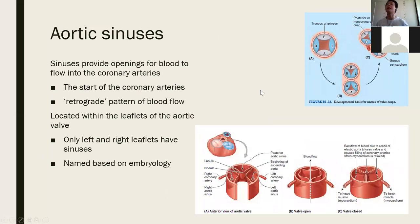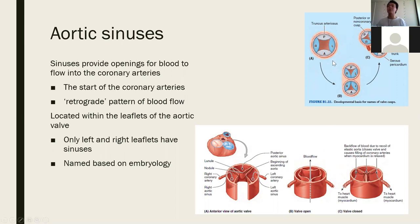Aortic sinuses provide openings for blood to flow into the coronary arteries — they're the beginnings of the coronary arteries. Blood flows into the aortic sinuses in a retrograde pattern. The aortic sinuses are located within the leaflets of the aortic valve — the left and right leaflets of the aortic valve are the ones with the sinuses and coronary arteries. There's only a left and right coronary artery — no posterior coronary artery — so the posterior leaflet doesn't have a sinus.